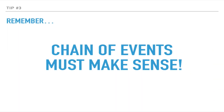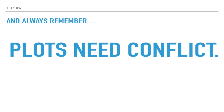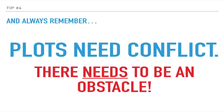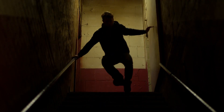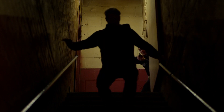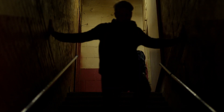Tip number three: remember you must have a chain of events that make sense. No matter how good an idea, it must fit the theme of the story. Only pick events that are logical and progress the plot. Tip number four: plots need to have conflict. In other words, there needs to be an obstacle. It's not merely enough to have a good idea — you also need an idea that presents conflict or an obstacle your character needs to overcome.